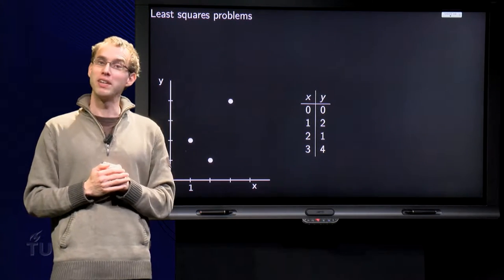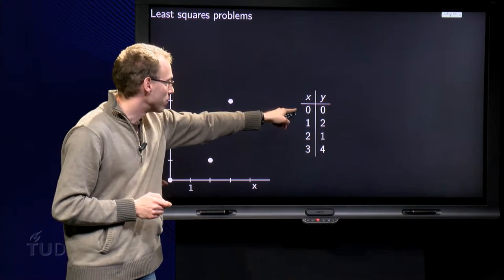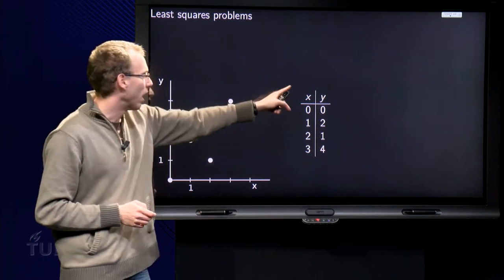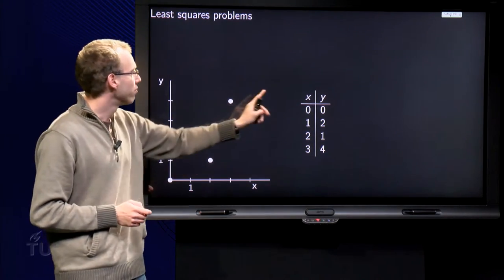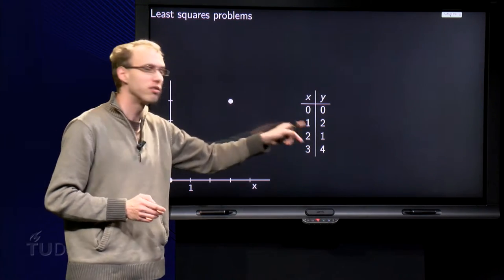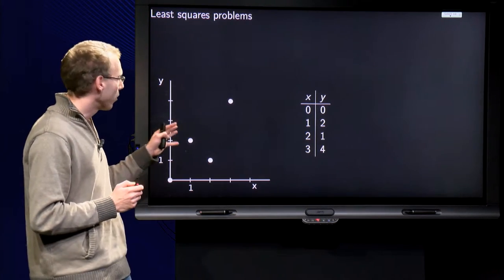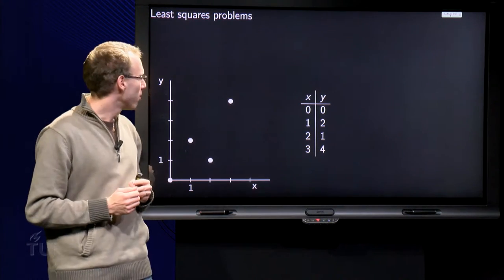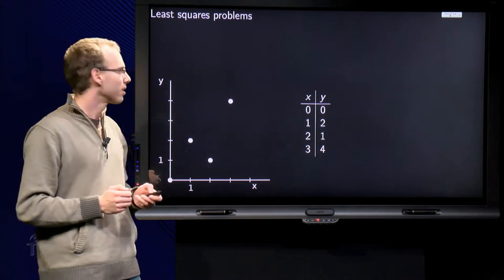Here we have an example. We write the mass x from 0, 1, 2, and 3, and we measured the stretching y, and it happened that for x equals 0 we found y equals 0, for x equals 1 we found y equals 2, for 2, 1 and 3, 4 are the other data points. And put them on a graph over here. And as you see, those four points are not exactly on a line.